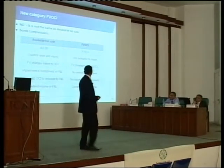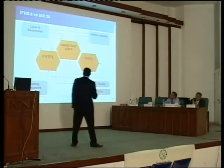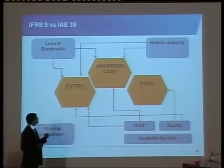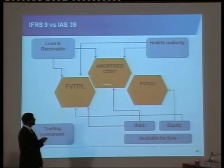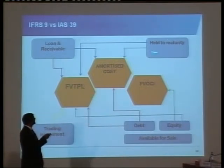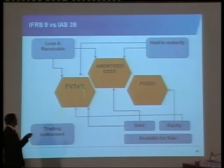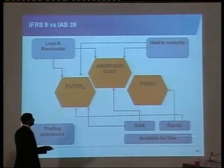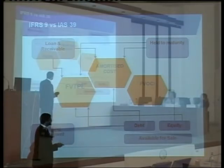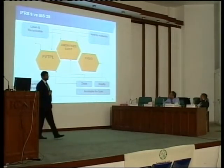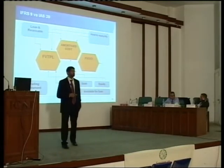Dividend income is still recognized in the income statement. Looking at a mapping: blue blocks are IAS 39, orange blocks are IFRS 9. If something was a loan or receivable under IAS 39, it's very likely to be amortized cost under IFRS 9, unless payments are not principal and interest. Held-to-maturity instruments are also likely amortized cost. Trading instruments can only be fair value through profit or loss. For available-for-sale instruments, you split debt and equity: debt could be amortized cost or fair value; equity goes to fair value through OCI or fair value through profit or loss.